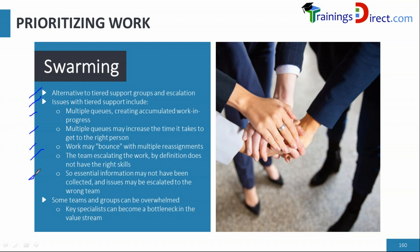Additionally, sometimes information hasn't been fully collected when escalating from level one to level two. The level-two team may come back requesting more information, requiring the agent to go back to the user — losing more time on top of the wrong-team escalation. Furthermore, if too many incidents flood one area, specialists who should be focused on training or design can become completely tied up handling incidents, creating a bottleneck in the value stream.